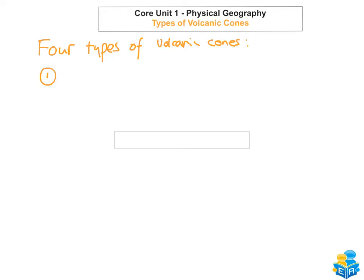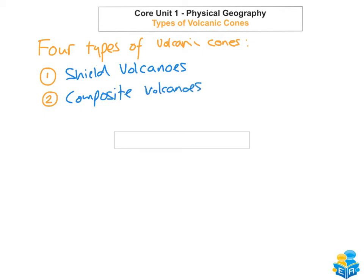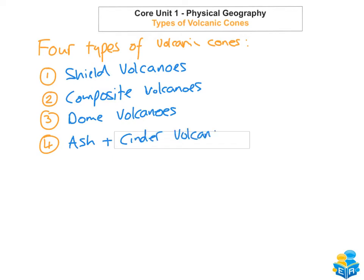The first one is a shield volcano. The second one is a composite volcano. The third type of volcanic cone is dome volcanoes. And the fourth one is ash and cinder volcanoes. These are the four different volcanic cones that you need to know for your Leaving Cert Geography exam, and we're gonna look at the differences between each of these now.